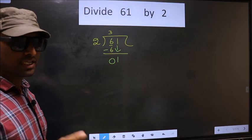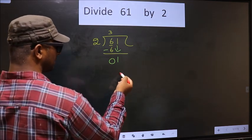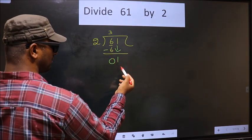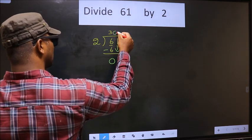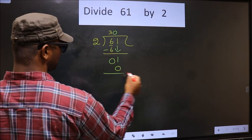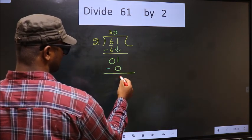Instead what you should think of is, what number should we write here? If we write 2 that will be larger than 1. So what we do is, we take 0 here. So now 2 into 0, 0. Now you subtract. 1 minus 0, 1.